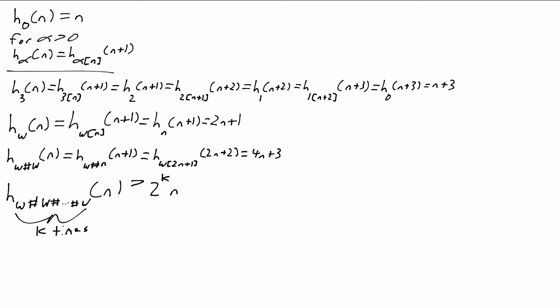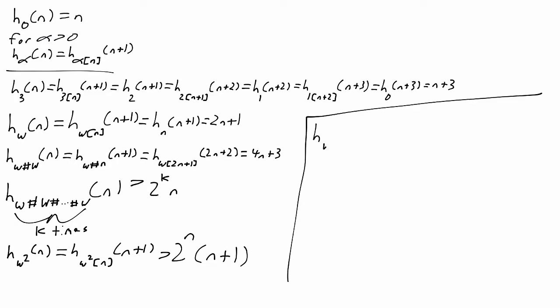And then h_{omega squared} of n is going to be h_{omega times n} of n plus 1, so it's at least around 2 to the n times n plus 1. And this iteration idea continues. h_{omega squared times k} is going to be 2 to the 2 to the 2 to the n plus 1 with k exponents in here. And then h_{omega cubed} of n is going to be the iteration of that.